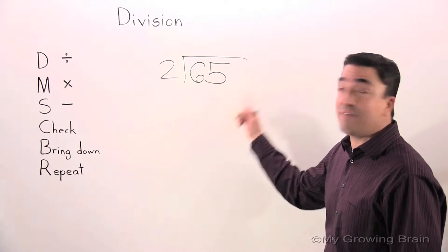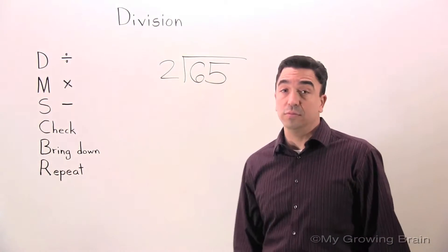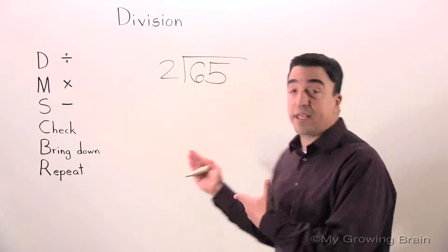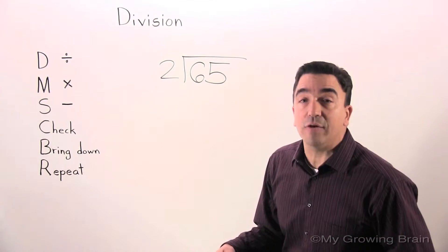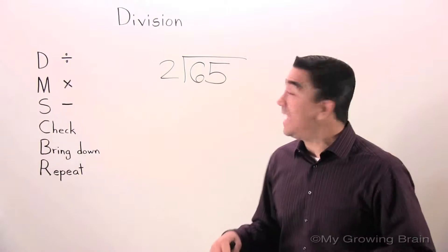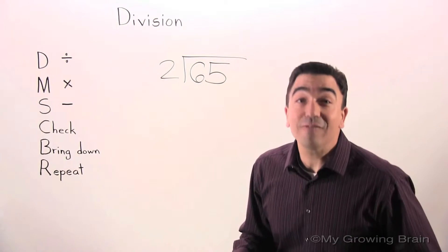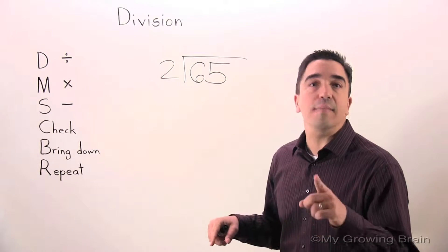Here's our problem: 65 divided by 2. Well, with this particular problem, you're going to get a remainder. Not today. Today, we're going to have a decimal in the quotient. Let me show you.